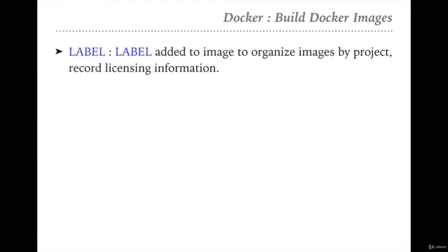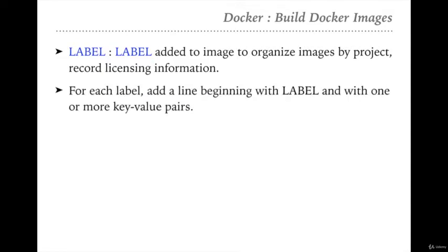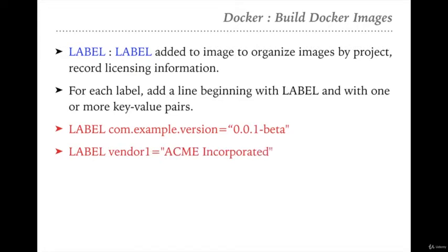Next is the LABEL instruction. LABEL is used to organize images by project or to record license information. With LABEL we are defining metadata for our image using key-value pairs. For example, we can define a label like 'com.example.version' with value '0.0.1-beta', or a label 'vendor' with value 'ACME Incorporated'. So with LABEL, we are defining key-value pairs which serve as metadata of our image.